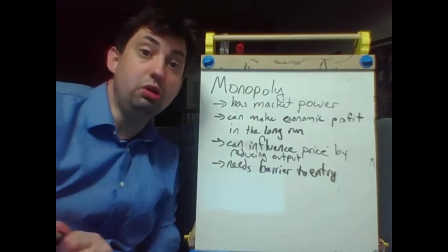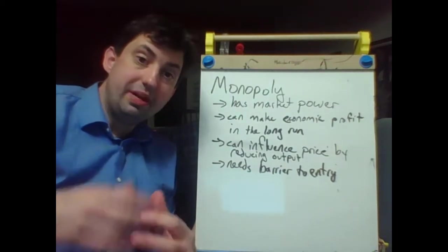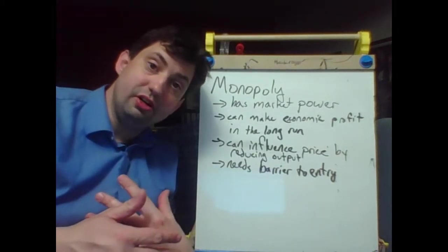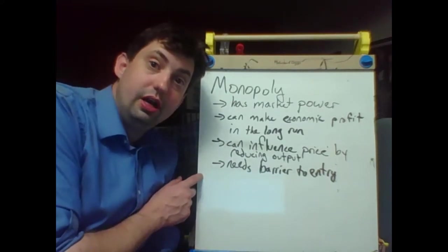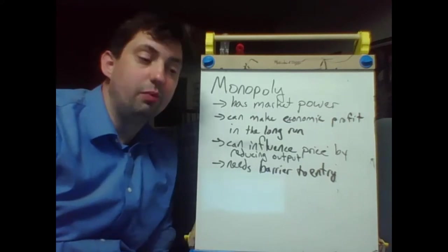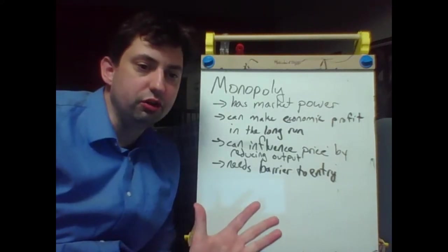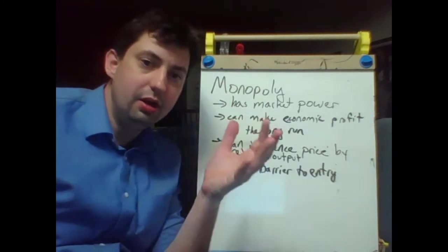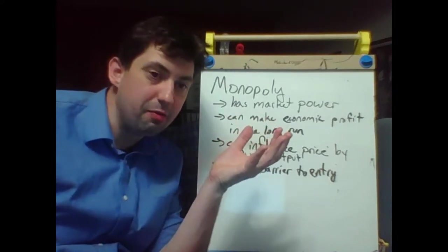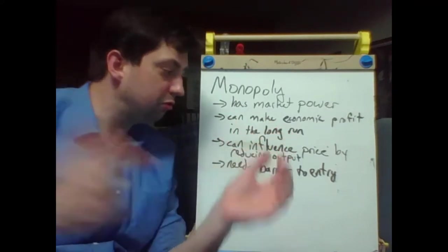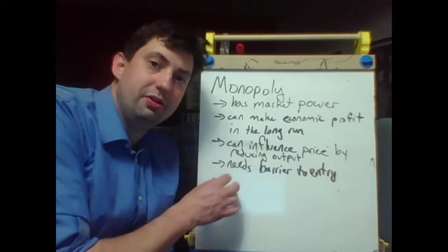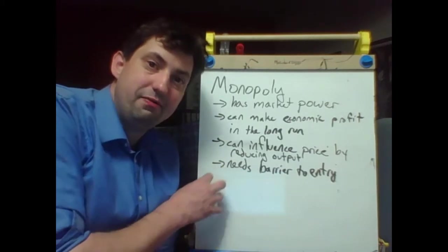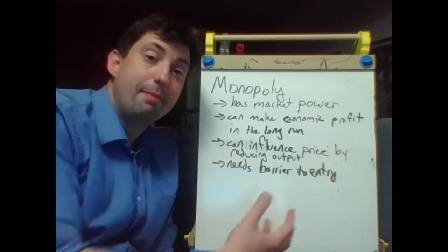How are they able to do this? Well, because we are no longer in that pure competition world. Monopolies always have to have some sort of barrier to entry. It's the only way that they can say we're going to cut down on our production and keep prices up. The only reason why that doesn't inspire people to enter is because they can't enter. There's some sort of barrier to entry. That is the defining aspect of what makes a monopoly.